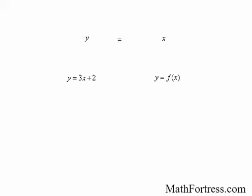Now let's compare the same equation of a line defined implicitly by a relation between x and y, the dependent and independent variables respectively. The equation of a line is expressed using the standard form, as opposed to slope-intercept form. Notice that one variable is not explicitly defined as a function of the other. Nevertheless, y is still a function of x — this is very important to remember.